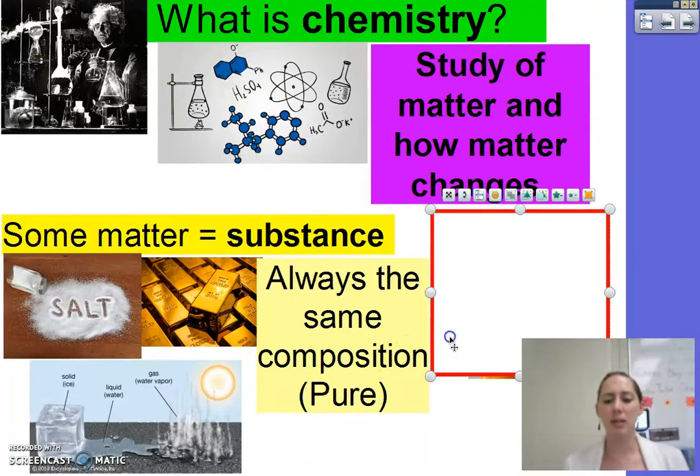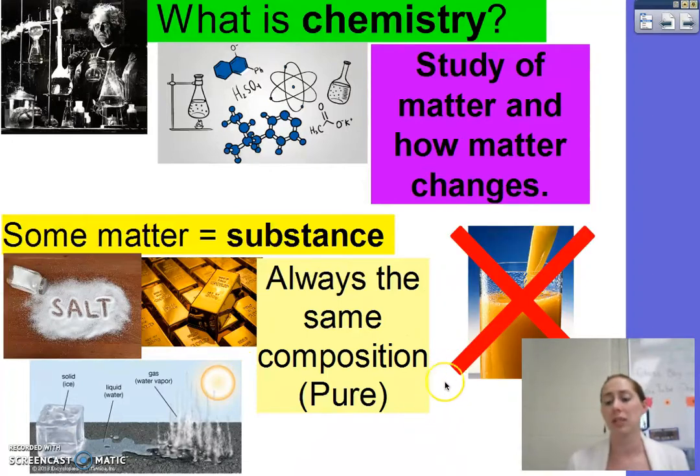An example of something that's not a substance would be something like orange juice. It still has mass and it still has volume, so it is matter, but it's not a substance because some orange juice has more pulp, some orange juice has more water, some is more sugary. It's not the same composition every single time.